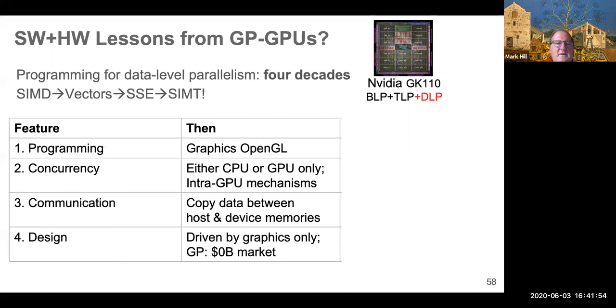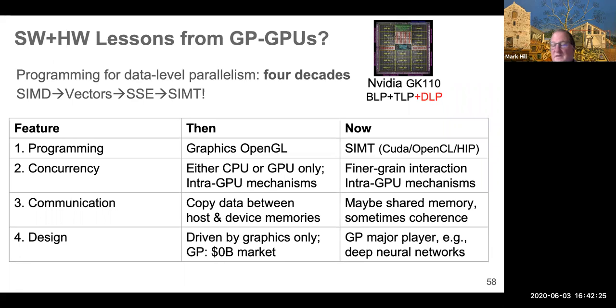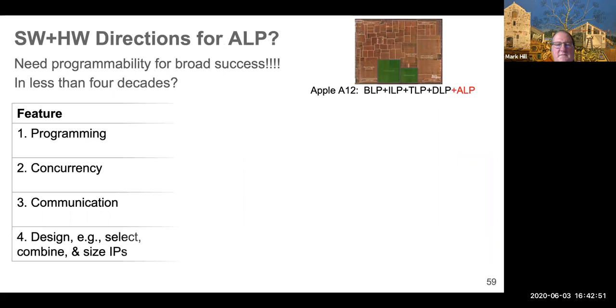So let's think about GPGPUs. And these came after four decades of SIMD vectors and SSEs. And in the beginning for programming, concurrency and communication, you had some stuff, right? You had OpenGL library, you could only run the CPU or the GPU. There were a few mechanisms for concurrency. We could do embarrassingly parallel easy, but there's few mechanisms for limiting. Copying was done very explicitly. And you couldn't do many changes to hardware because general purpose was a $0 billion market. Now that has evolved tremendously in part driven by the fortuitous deep neural networks. SIMT model has been very successful. There's much more fine grain management of concurrency. You have shared memory sometimes and sometimes coherence, which may or may not be a good thing. And general purpose has now become a major player.